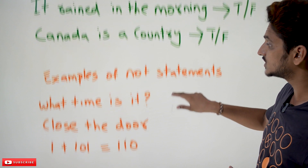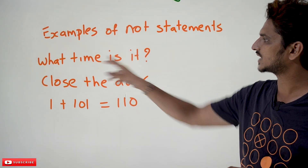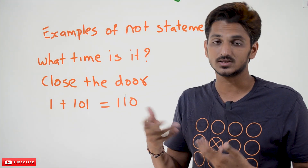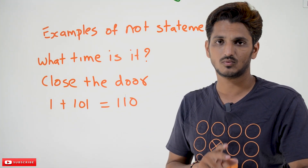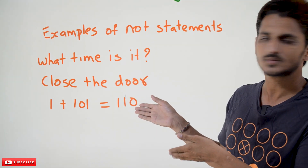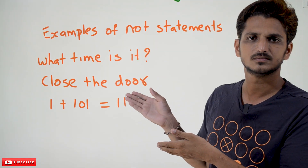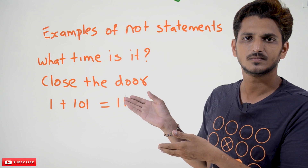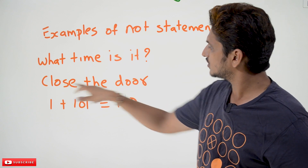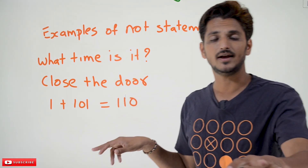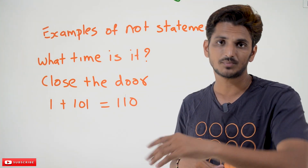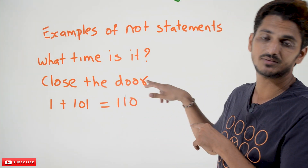Now let's look at a few examples which are not statements. 'What time is it?' — it is a question. Your answer will be something like the present time; you cannot say yes or no, true or false. That's why this is not a statement. 'Close the door' — it is a command. You cannot say yes or no; you have to do some action. This is not a statement.